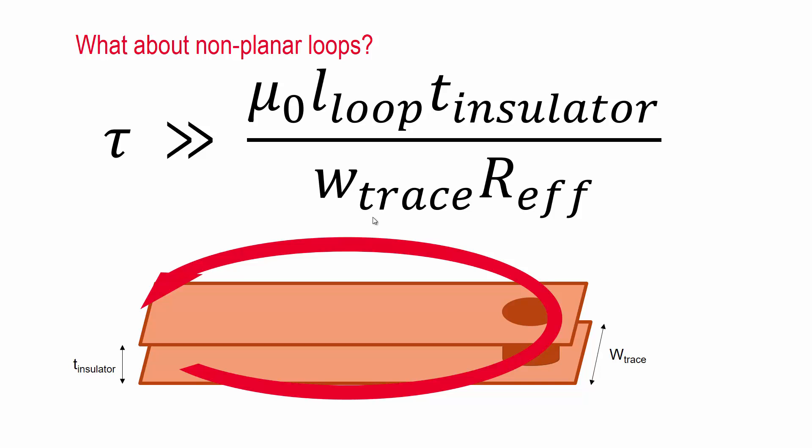So this gives us a way of making this loop inductance a lot smaller. We still have to count up the number of squares on the loop. In other words, the loop length divided by the width of the trace. But we can make this width quite broad.